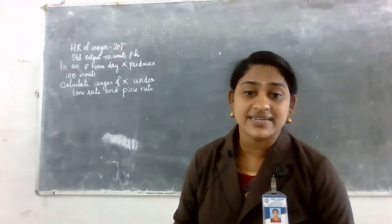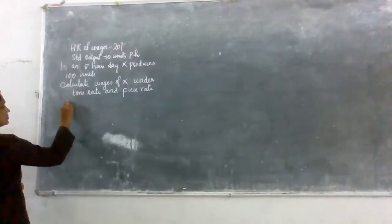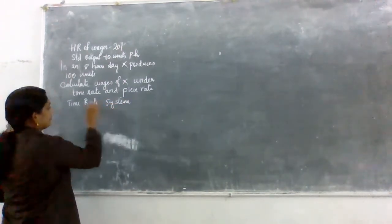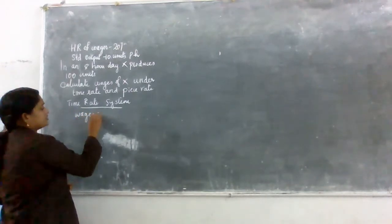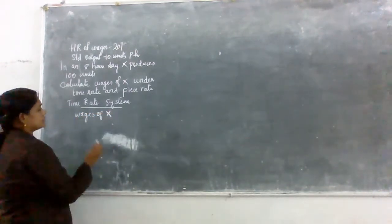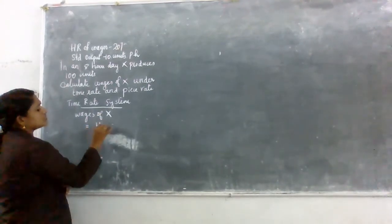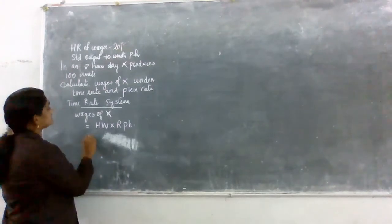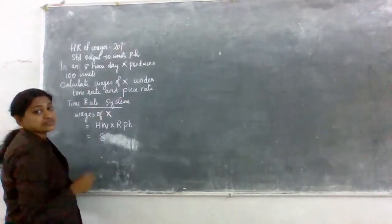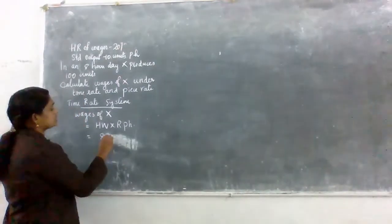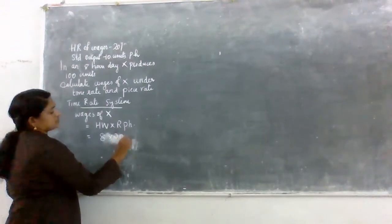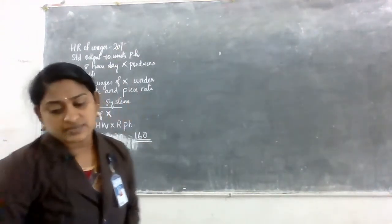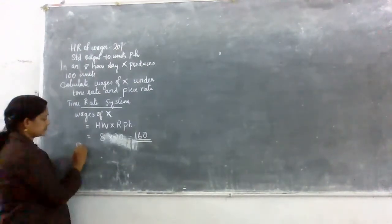First, we have to calculate wages under the time rate system. Wages of X equals hours worked into rate per hour. Hours worked is 8. So wages equal 8 into 20, which is 160. Time rate earnings are 160.